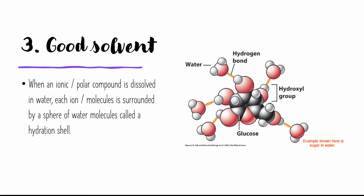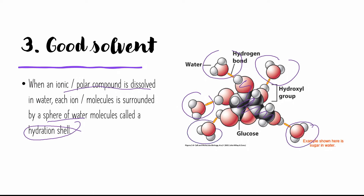The next property is that water is a good solvent. Water is a polar molecule with partially positive and partially negative parts, and it can dissolve most substances. When an ionic or polar compound is dissolved in water, it will be surrounded by a sphere of water molecules called a hydration shell. Here you can see glucose surrounded by water molecules, which form hydrogen bonds between the partially negative and partially positive sides of the glucose and the water molecules — this is the hydration shell.